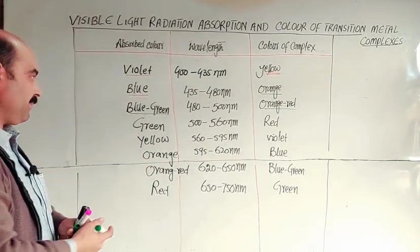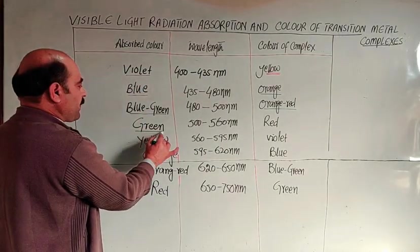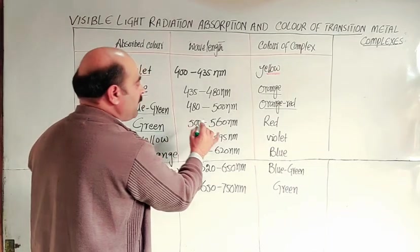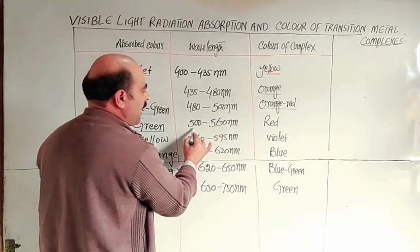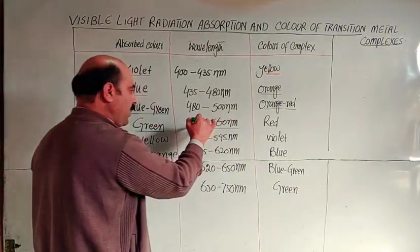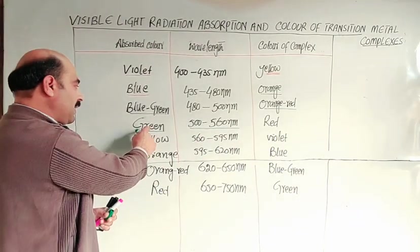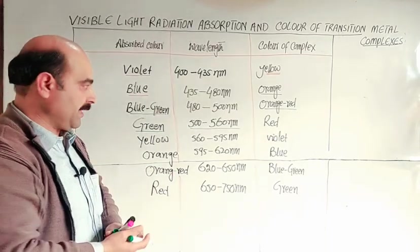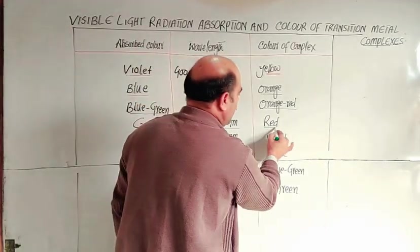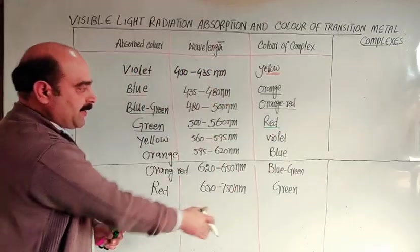If it absorbs green color from the visible range, the radiation whose wavelength is 500 to 560 nanometer, meaning green color is absorbed in this range, the complex will appear red. This is the complementary color.